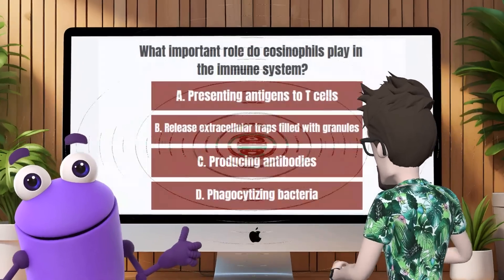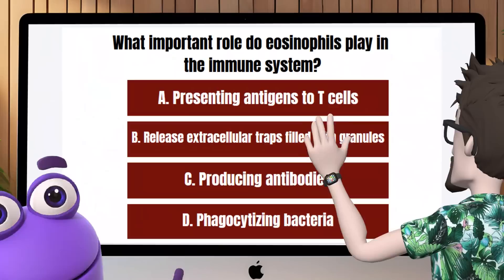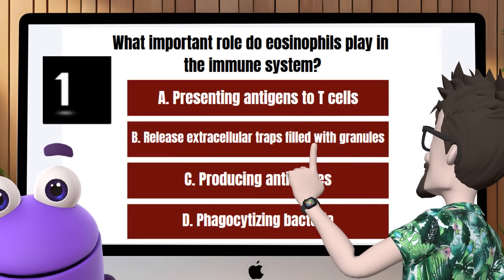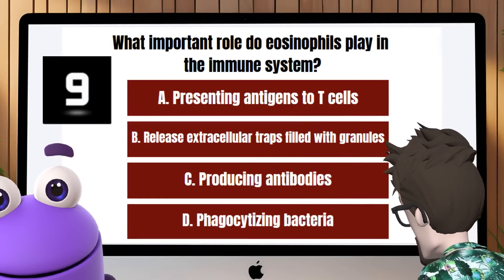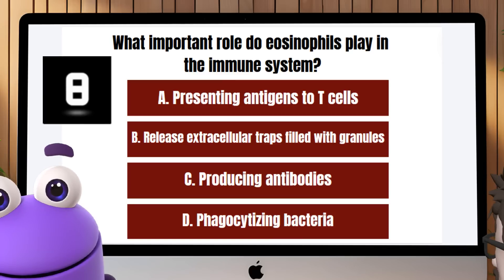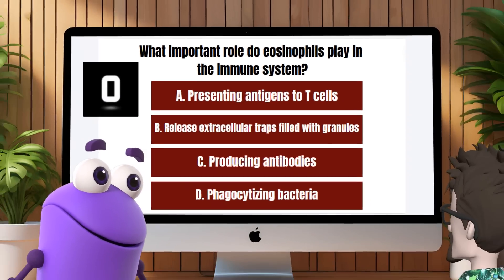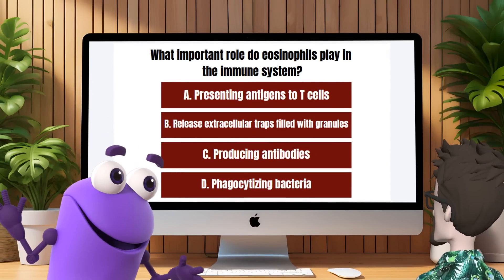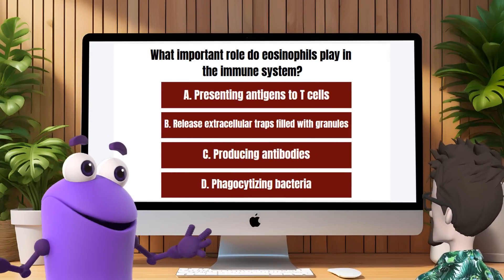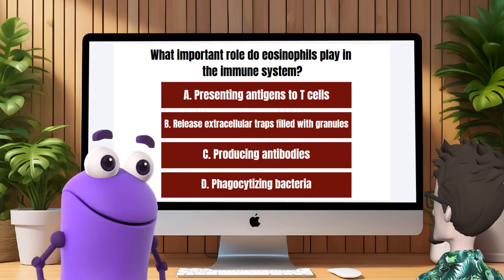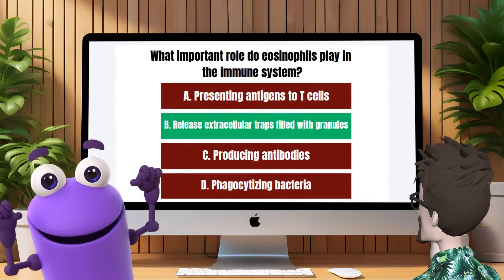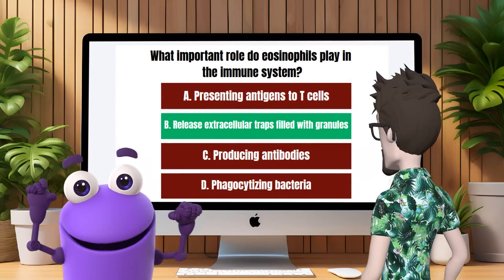Question 7: What important role do eosinophils play in the immune system? B, by releasing extracellular traps filled with granules. Right again. Eosinophils release these traps to fight parasites and other pathogens.